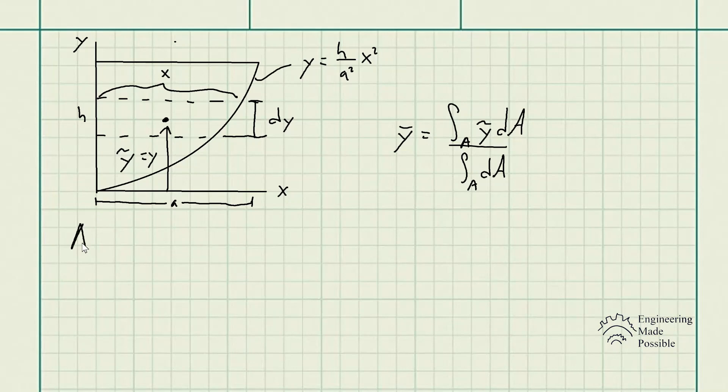So we have the length being x and we have the width being the differential dy. So the area, if we would just go with the length times width, would be x y dA. In this case, it's with respect to the y-axis, so it's x dy in this case. And so this is what we're going to be using for the integrals.